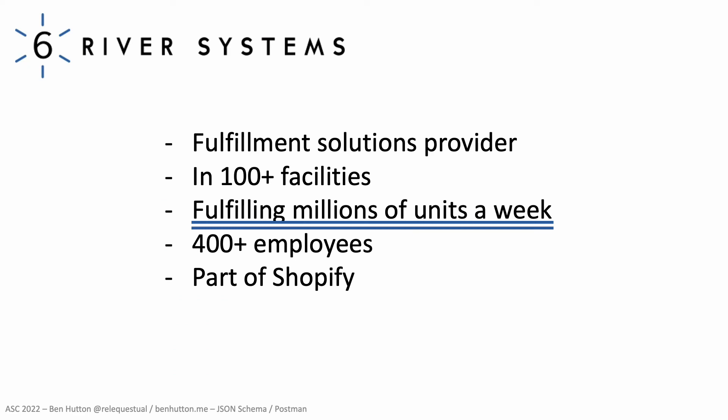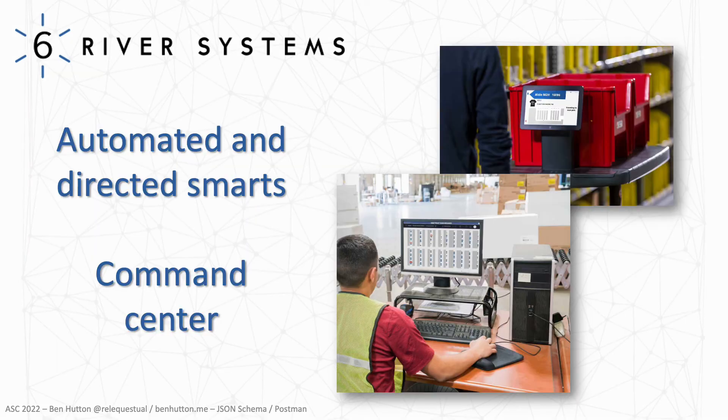SixRever Systems, recently acquired by Shopify, is a fulfillment solutions provider — or in their words, they provide solutions for warehousing automation. Installed in over 100 facilities with over 400 employees, with their installations fulfilling a large number of units every week. SixRever Systems' current crown jewel is Chuck, an autonomous warehouse robot.